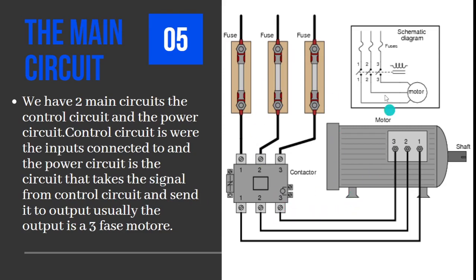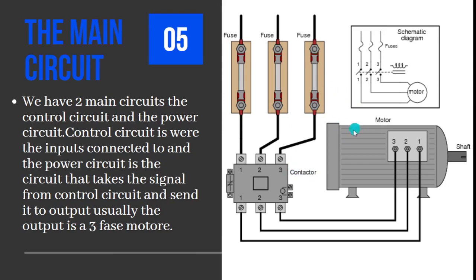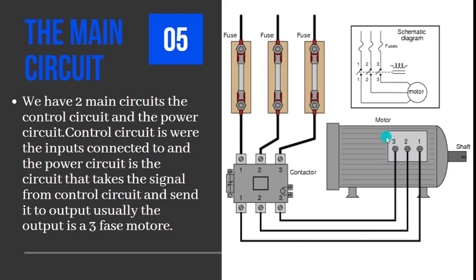Here is a power circuit. The power circuit takes the signal from the control circuit using a contactor — which we will explain later — and delivers it to the motor to run it and do its job in the circuit. The three-phase supply shown here is the supply voltage or supply current to the circuit.